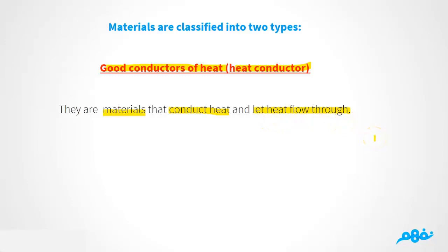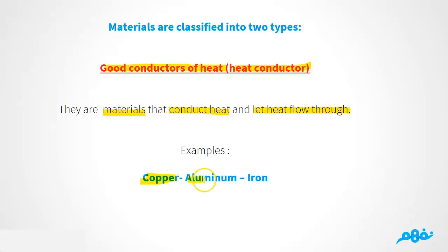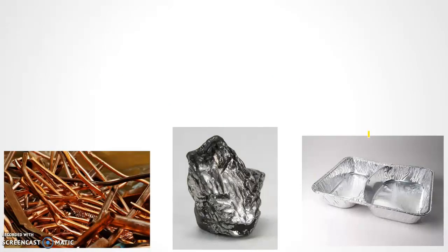Good conductors allow heat to pass through them. For example, copper — have you ever seen a copper pan? We also have aluminium and iron. So we have three materials here that are good conductors of heat: materials that conduct heat and let heat flow through. Look at these pictures — this is copper, this is iron, and this is aluminium.